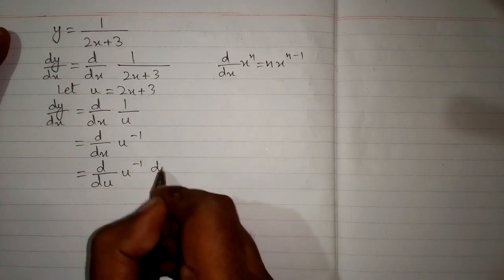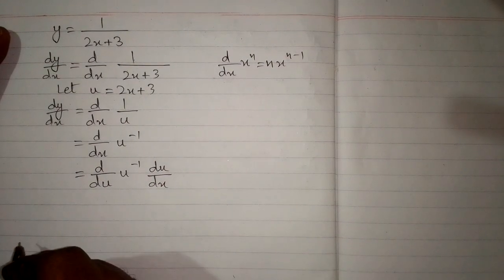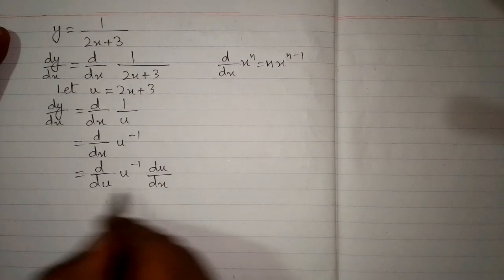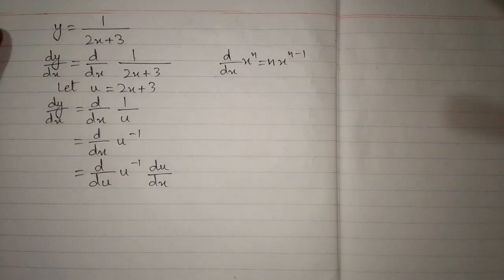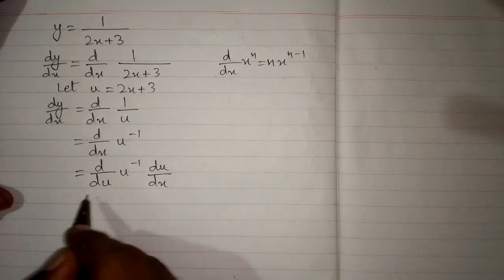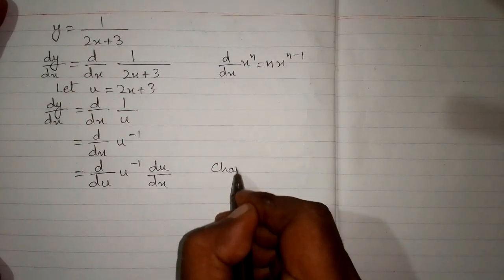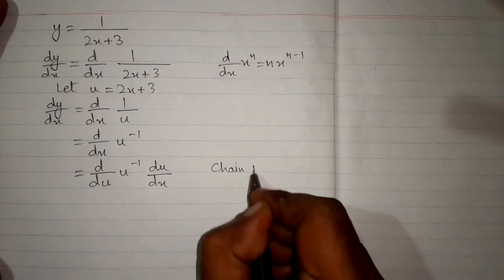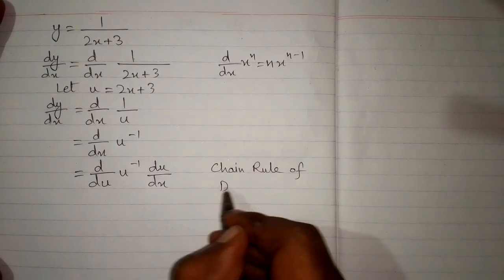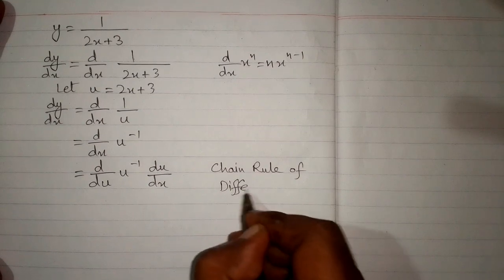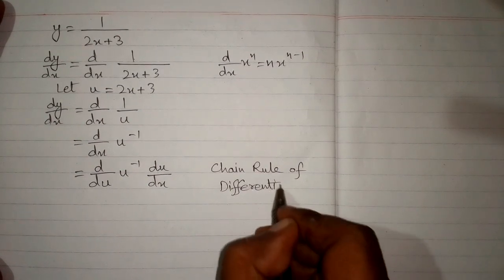And we multiply it by du upon dx, so that again we have dy by dx. This is called the chain rule of differentiation.